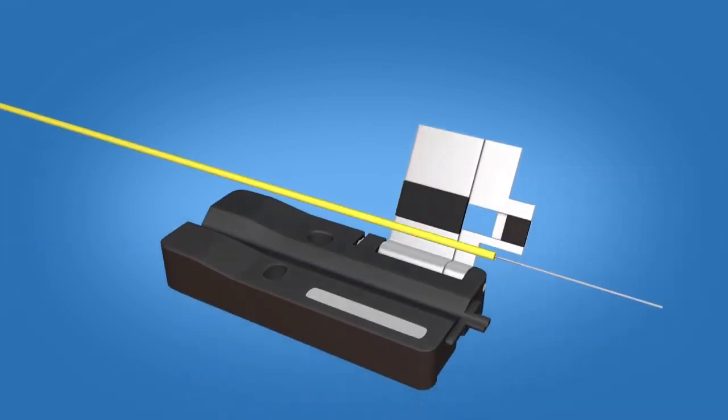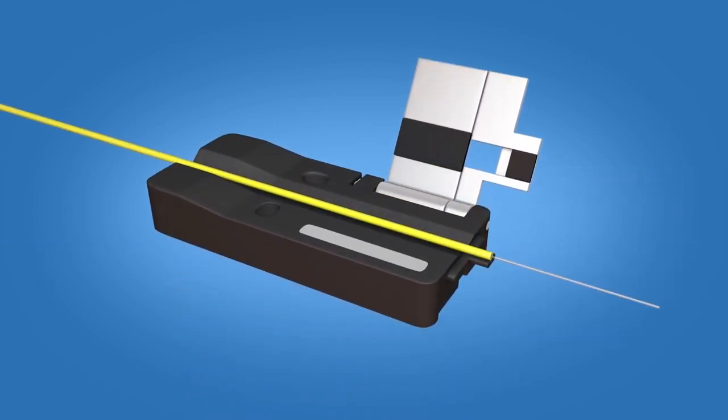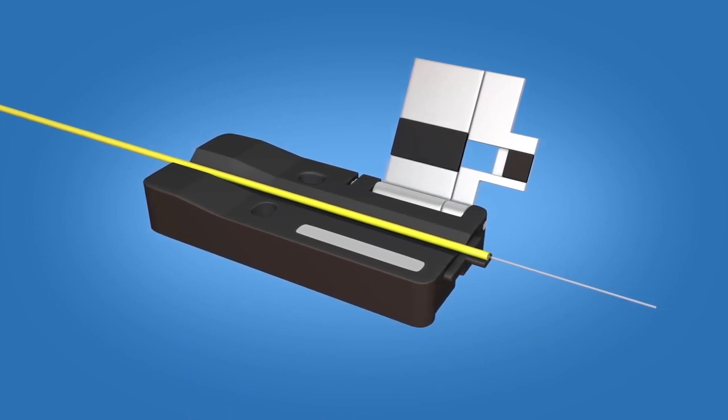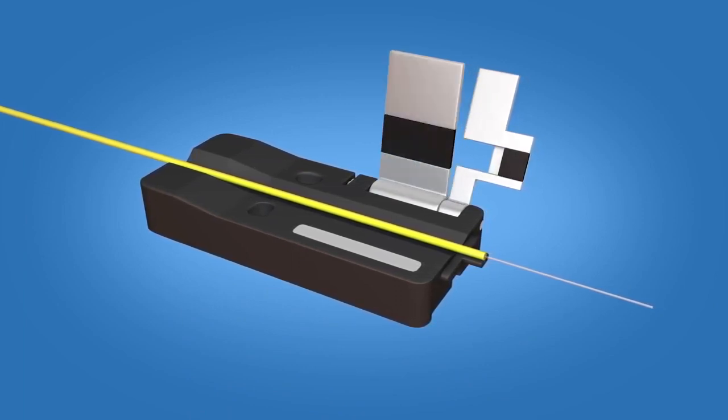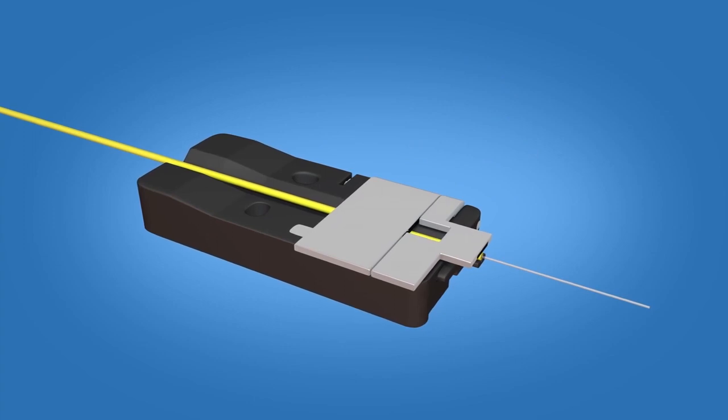Clean the fiber with a lint-free wipe and fiber preparation fluid. Place the fiber in the 900-micron FuseConnect fiber holder with the end of the 900-micron coating at the end of the fiber holder. Close the fiber holder clamp.